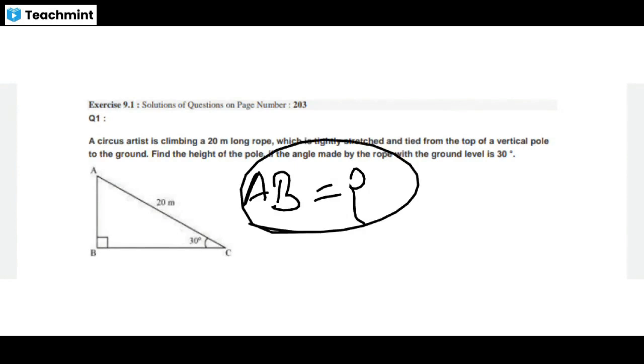Let me solve this. The angle is 30 degrees. Sin theta equals perpendicular upon hypotenuse. The perpendicular is AB, and the hypotenuse is AC. Sin 30 value is 1/2. We need to find AB, the height of the pole.